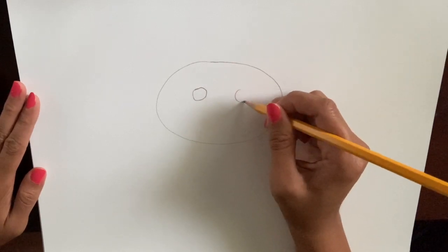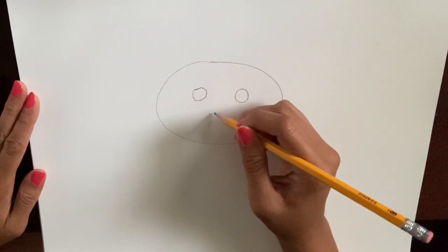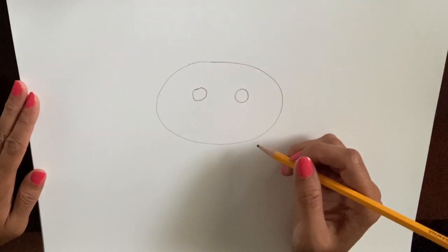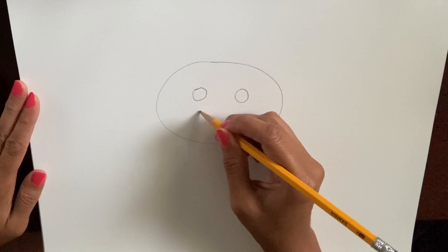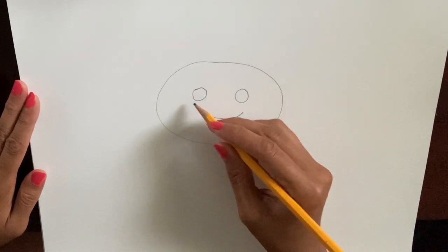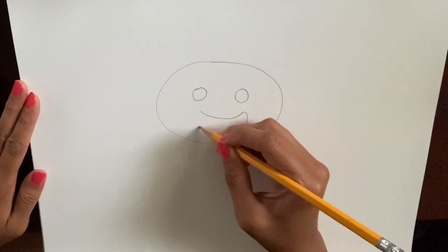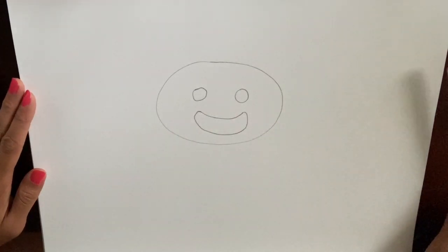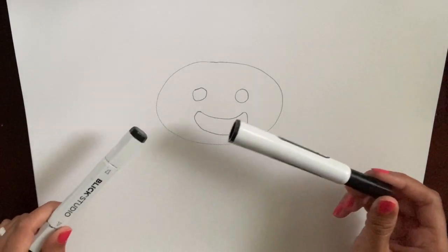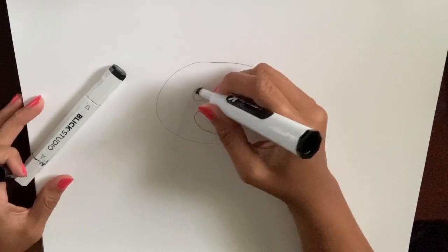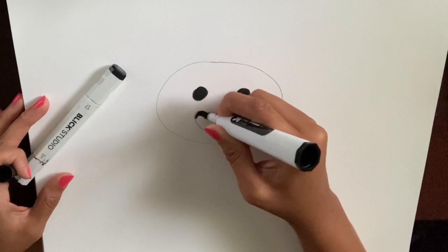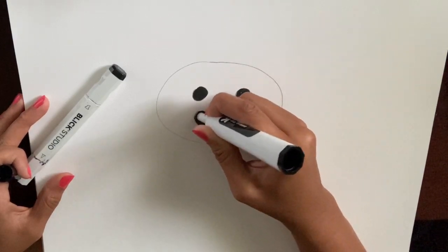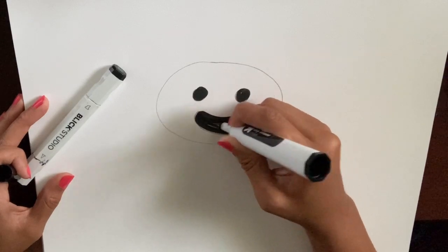We're going to draw two circles for the eyes and then draw a smiley face underneath. We're going to start with a line under the eyes that curves from one eye to the other without touching them, and then make it a shape by going from one end, dipping under, and coming back. If you have a marker, we're going to outline and fill the inside of our eyes and our mouth.